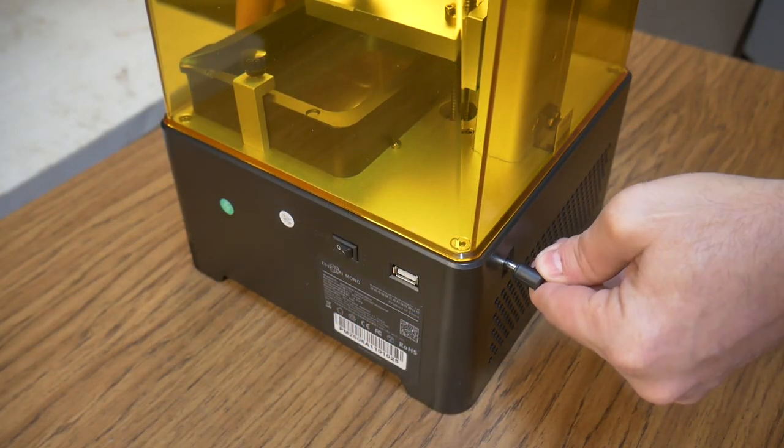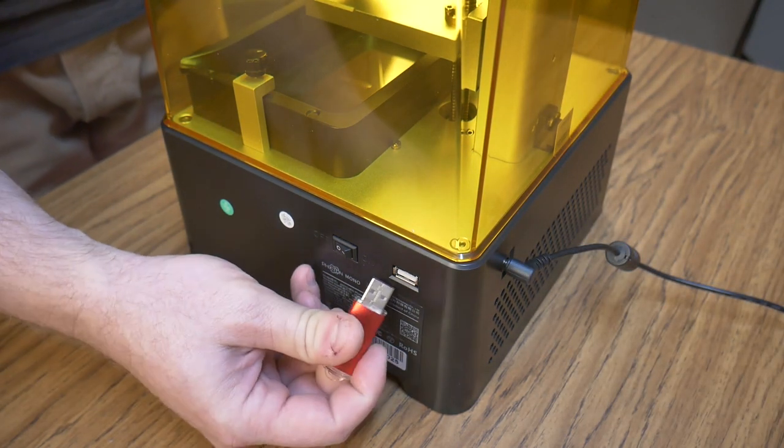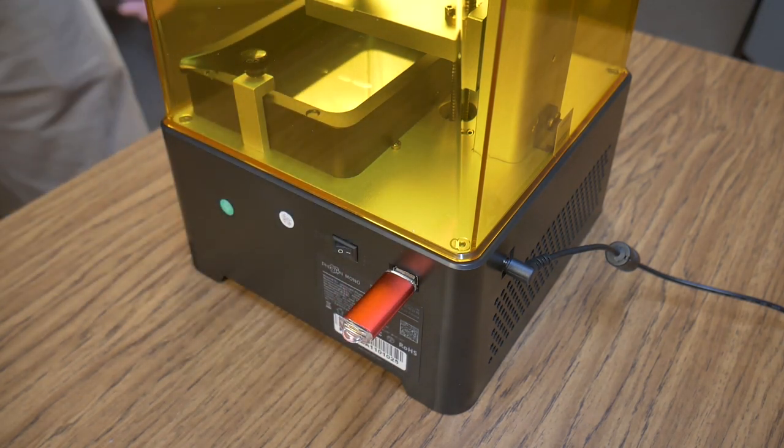The power plugs into the back and the USB port and power switch are on the right side of the printer toward the back. I find the position of the port and switch convenient and easy to access.